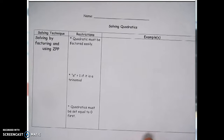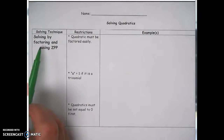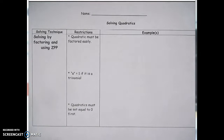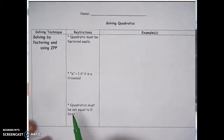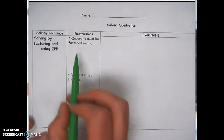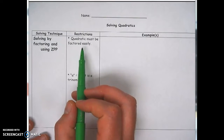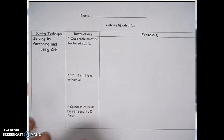There are four solving techniques, and each page has a different solving technique on it. The first one we're going to look at is solving by factoring and using the zero product property. This can only be used under certain conditions. The problem must be factored easily — if it doesn't look easily factorable, we'll have to switch to something like completing the square or the quadratic formula.